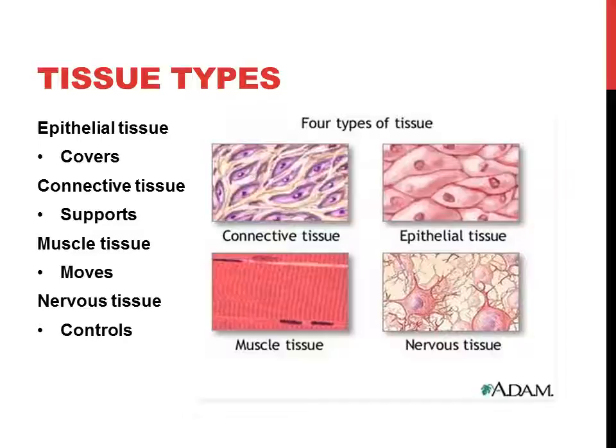The first type is epithelial tissue. Its basic role is to cover organs and line cavities. It's oftentimes very thin and serves as a membrane that can absorb and secrete things — it's an interface tissue, a barrier.